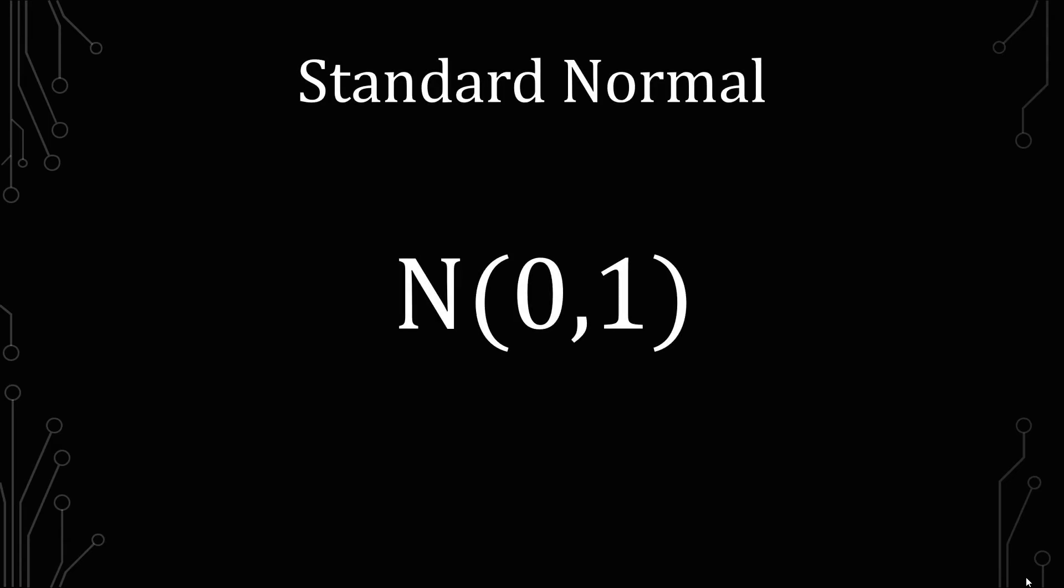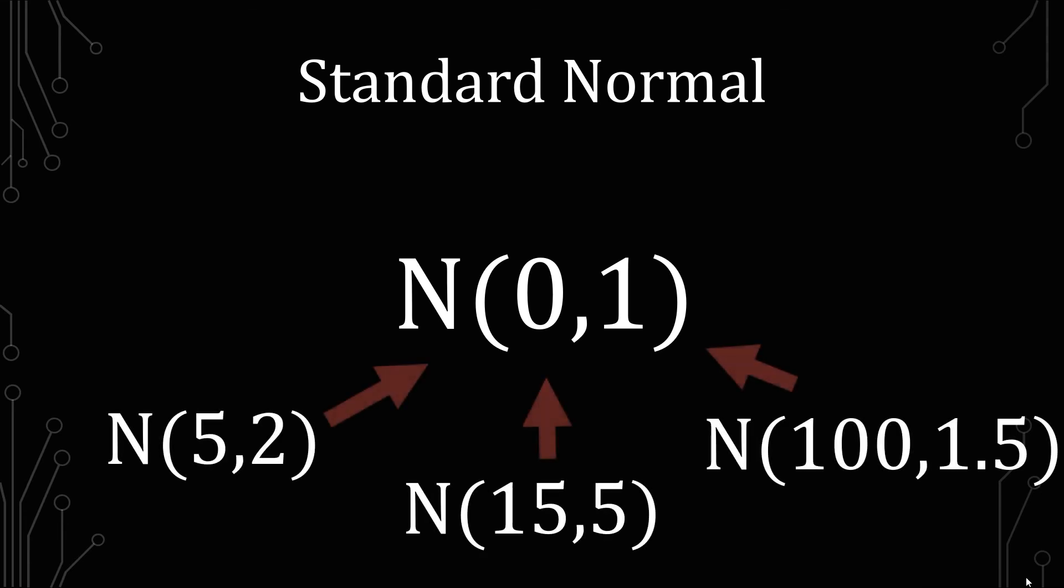Now, the great thing about the normal distribution is that you have something called the standard normal distribution, where it has a mean of zero and a standard deviation and variance of one. And what's great about that is that you're able to take any normal distribution and approximate it to that standard normal distribution. Because we know that normal distributions come in different shapes and sizes, it's good to approximate it to, or bring it back to the standard normal, where we can then compare the different normal distributions and see how they match up against each other.